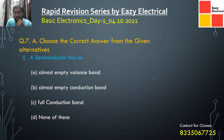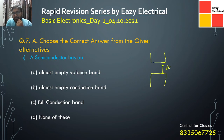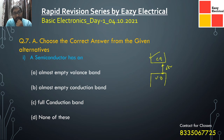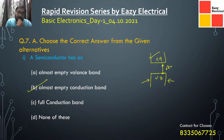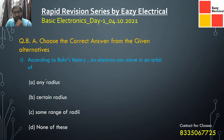A semiconductor has an almost empty conduction band. There is a band gap between the valence band and conduction band. The conduction band is initially empty — no electrons are present there. When energy is provided, some electrons from the valence band jump to the conduction band. So the correct description of a semiconductor is that it has an almost empty conduction band.